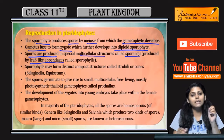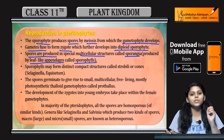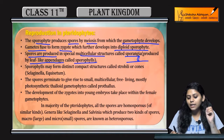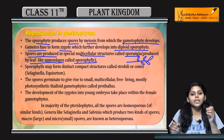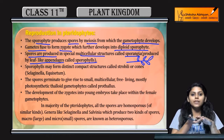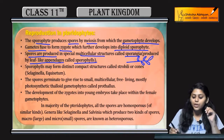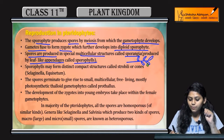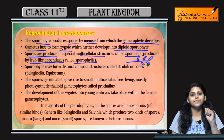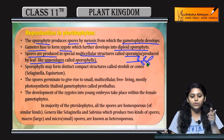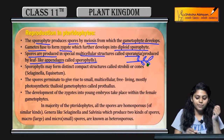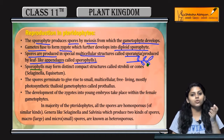Spores are produced in special multicellular structures called sporangia. Sporangia are produced by leaf-like appendages called sporophylls. In pteridophytes, on the lower side of the leaves, sorus and sporangia are present. From these sporangia, spores are released.